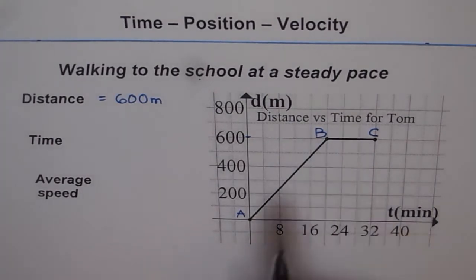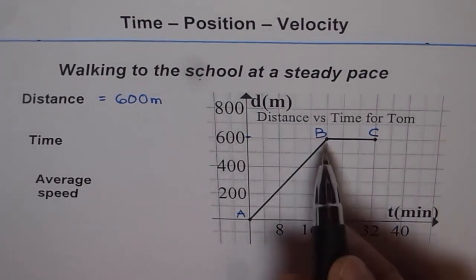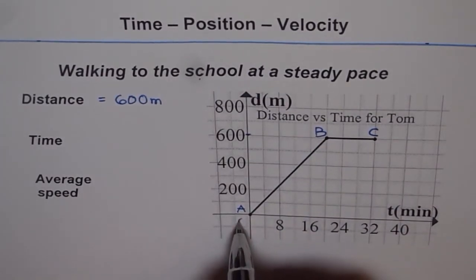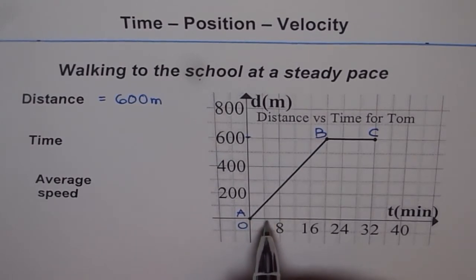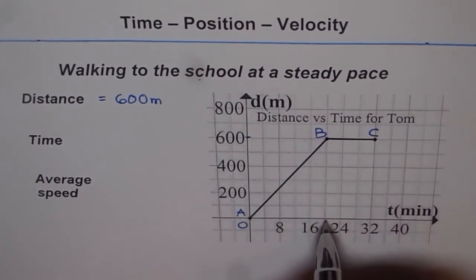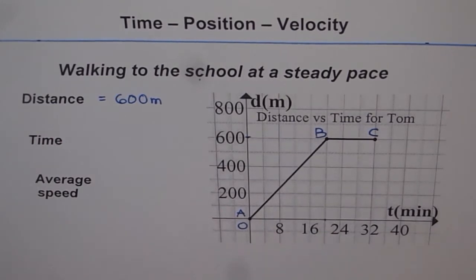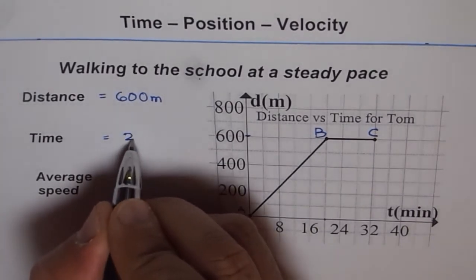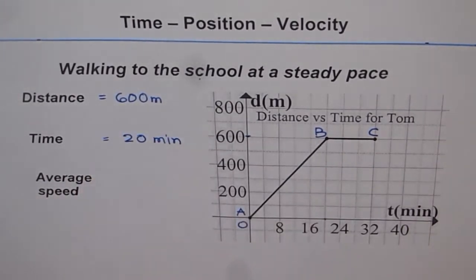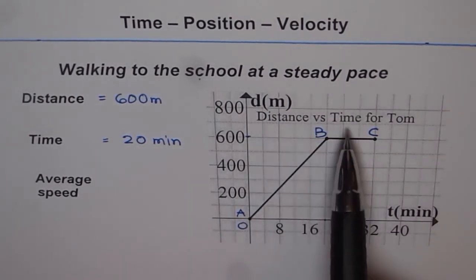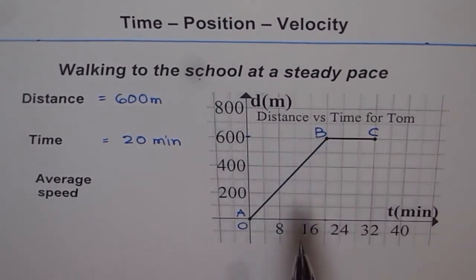Well we can also read the time. After how many minutes did Tom reach the school? Well Tom started at 0 minutes. Let's say 0 is a starting point. So it reached 4, 8, 12, 16 and this corresponds to 20 minutes. So time taken to reach the school was 20 minutes. So that is how we can read distance and time from a distance time graph. Do you see how straightforward it is?